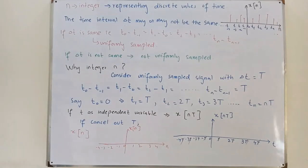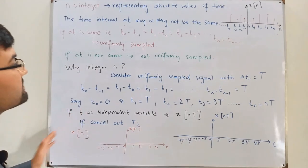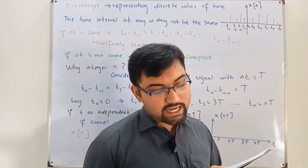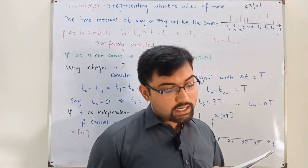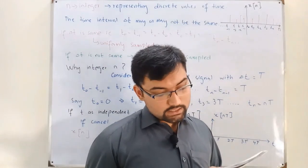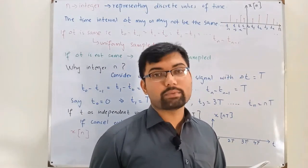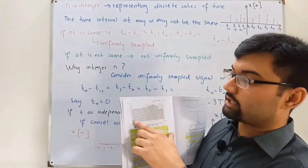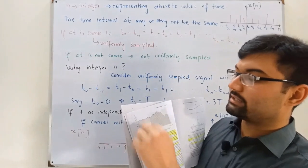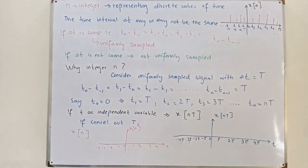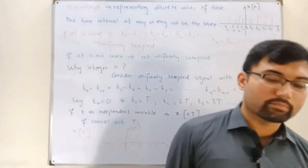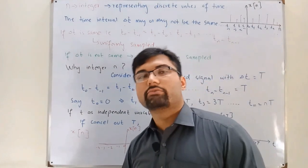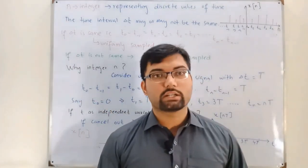From the book: a speech signal as a function of time and atmospheric pressure as a function of altitude are examples of continuous time signals. The weekly Dow Jones stock market index is an example of a discrete time signal, shown in a graph where it is defined for some discrete values of time. You can check further examples in the book. That's all for this lecture — see you in the next one very soon, inshallah. Take care, goodbye.